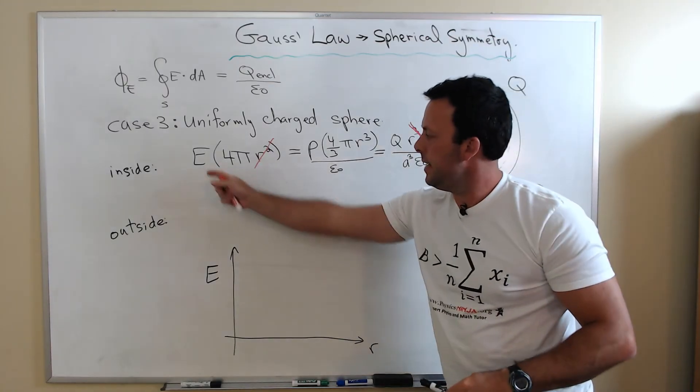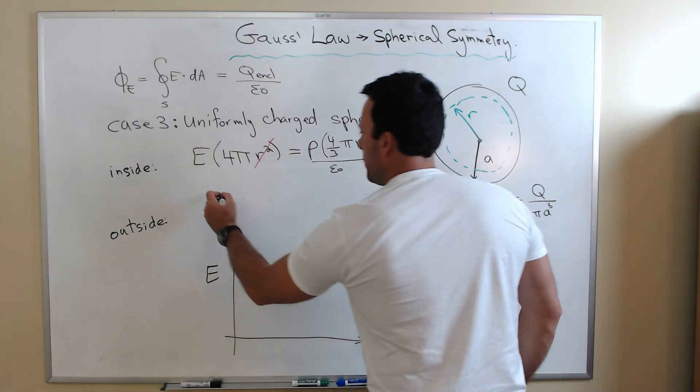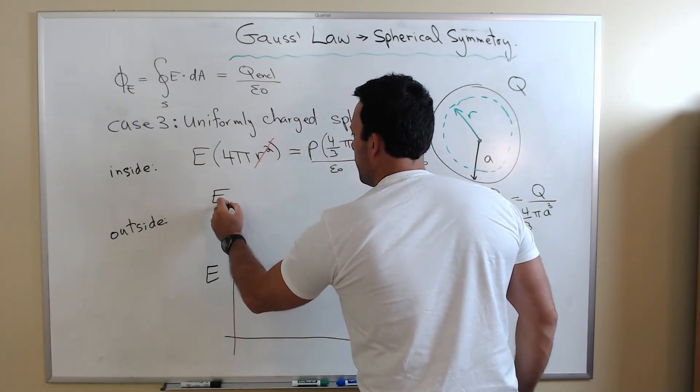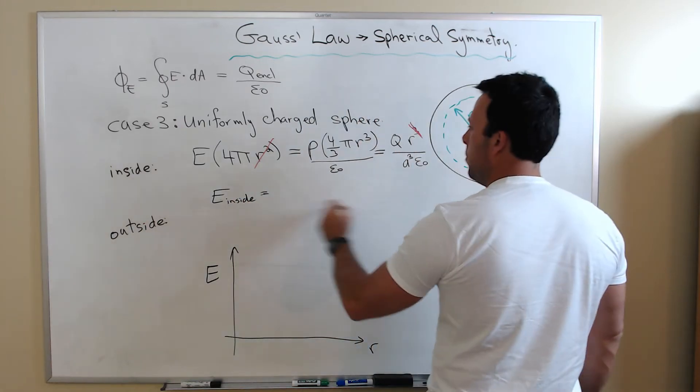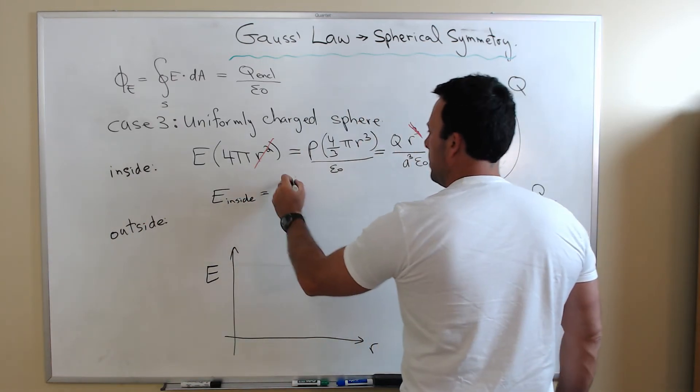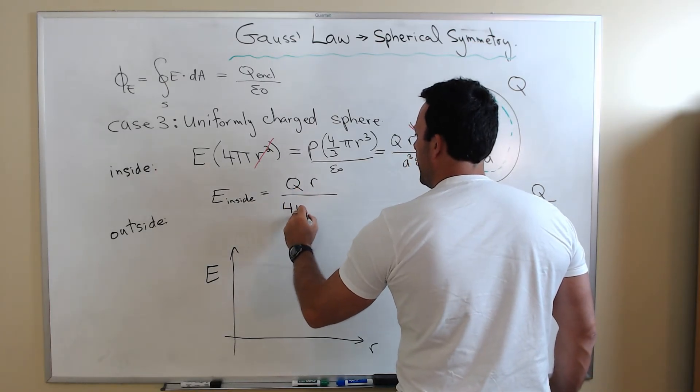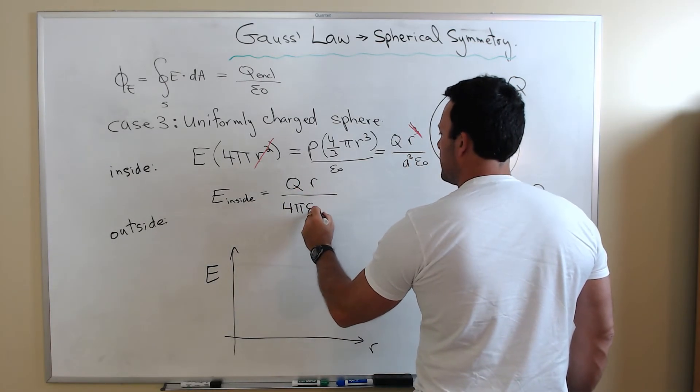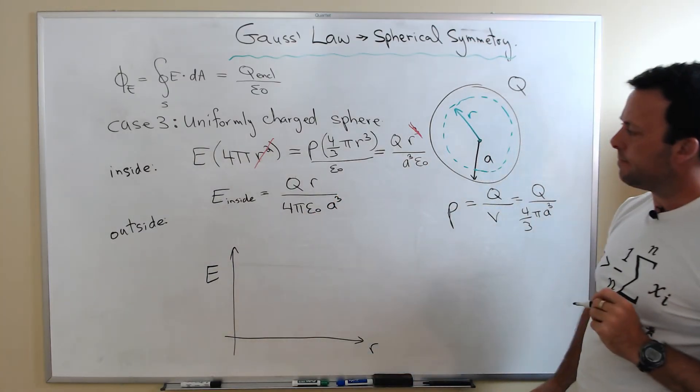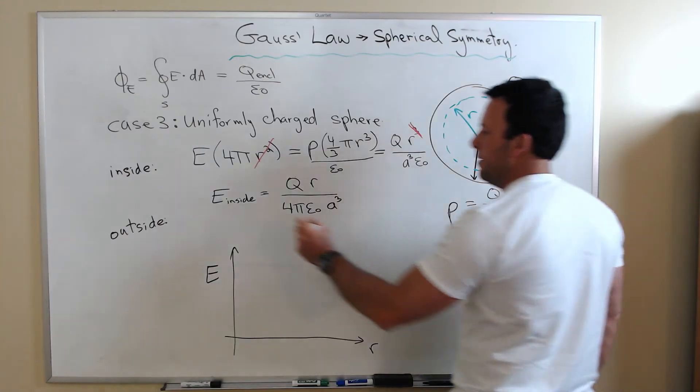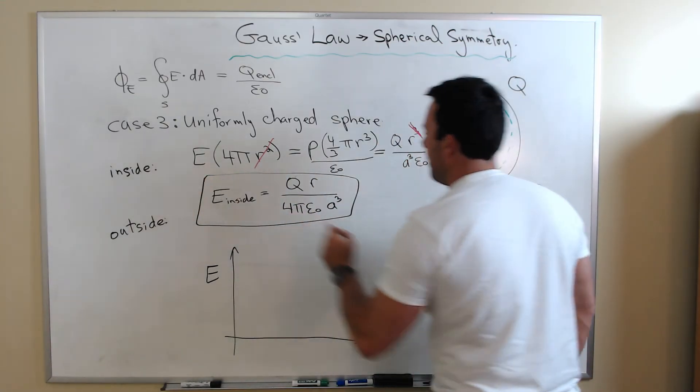If I isolate now, I'm going to find that the field inside is simply going to be QR divided by four pi epsilon zero times A cubed. There's the expression for the field inside the sphere.